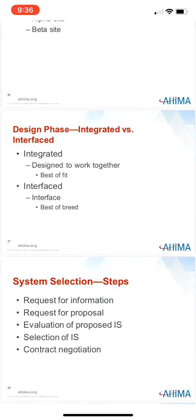If the decision is made to purchase an information system from a vendor, the next decision is whether the product should be integrated or interfaced. Integrated information systems have separate applications designed to work together — data are entered into one information system and then accessible in others. This type of information system is much easier to manage than an interfaced system because of the lack of interfaces. Integrated information systems collect, store, and retrieve information from the same database and have a similar screen design, making it easier for users to move between systems. The decision to purchase software from a single vendor is frequently called best of fit.